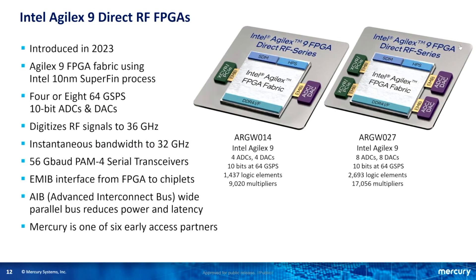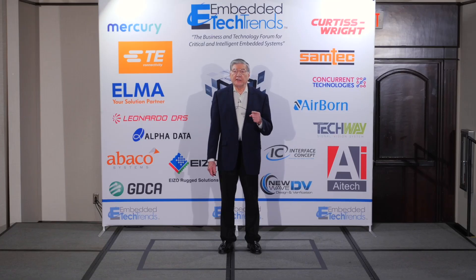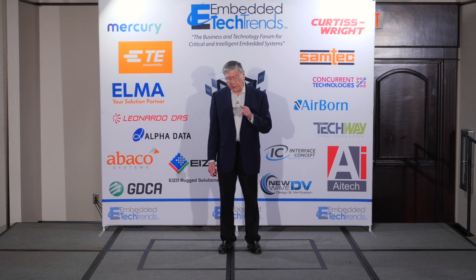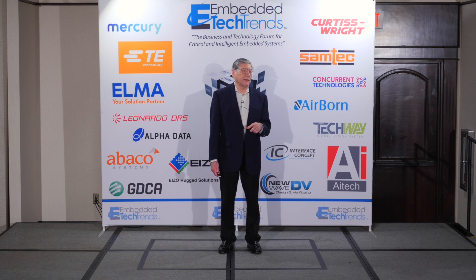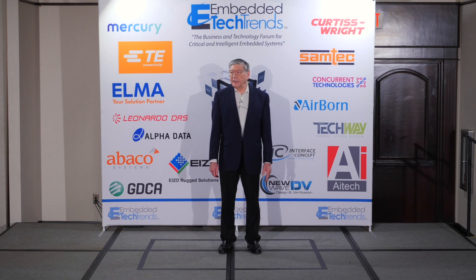Recently, Intel announced their Agilex X9 series — the latest and most advanced FPGA technology from Altera/Intel, based on the 10-nanometer process with tremendous FPGA resources. It has four or eight channels in and out depending on which chip. The larger 027 on the right has twice the FPGA resources as the 014 on the left, matching processing capability with the doubled channel count. A major advantage is that the connection between the data converter chiplets and the FPGA uses the AIB Advanced Interconnect Bus, providing extremely low latency — vital for many electronic countermeasure systems.